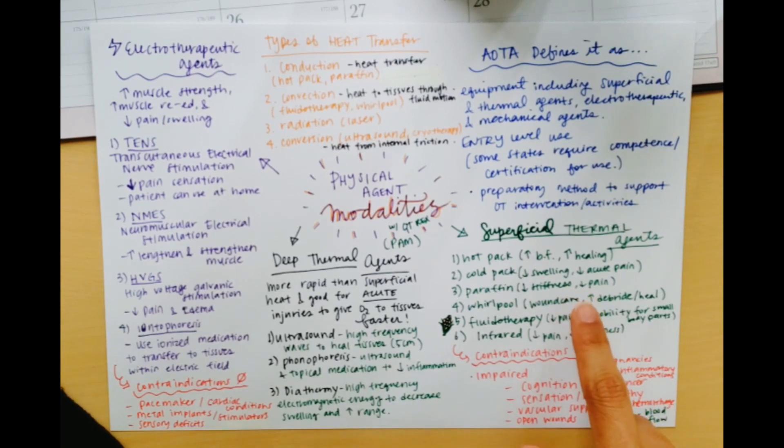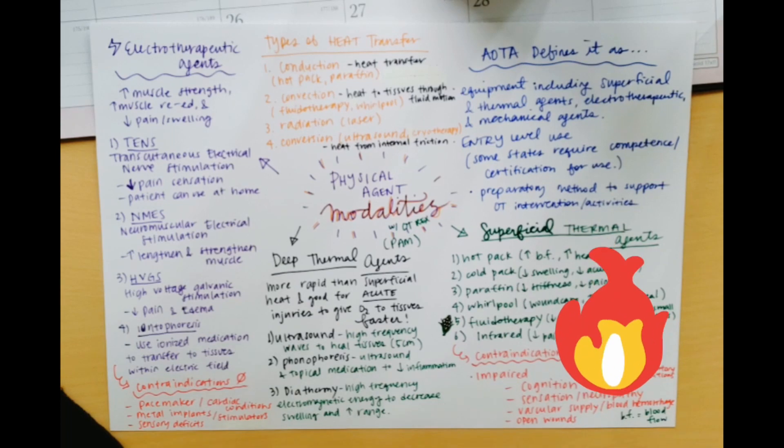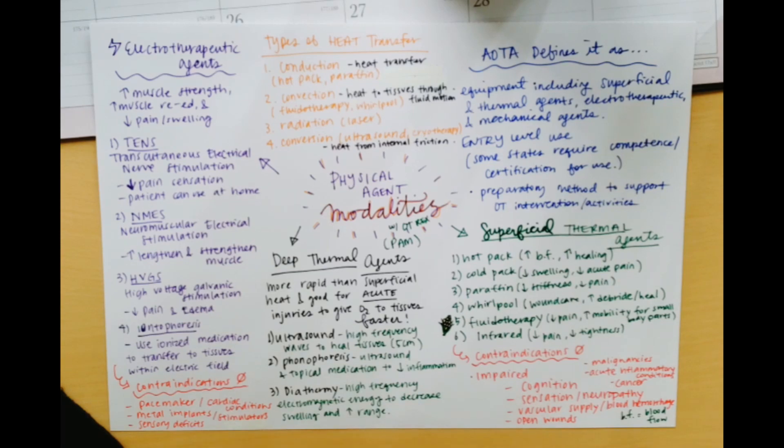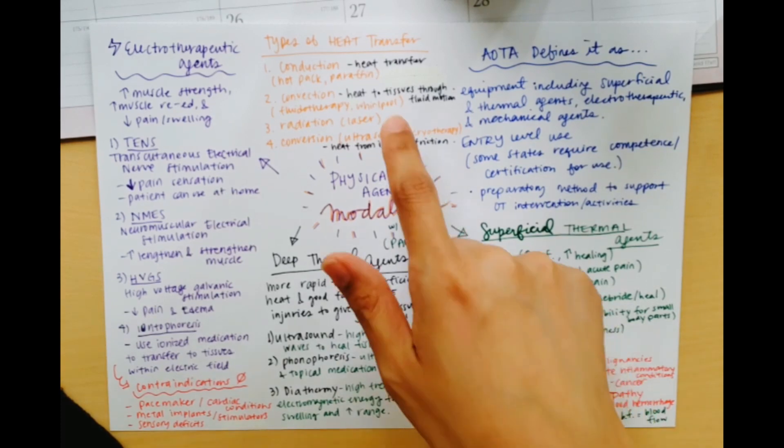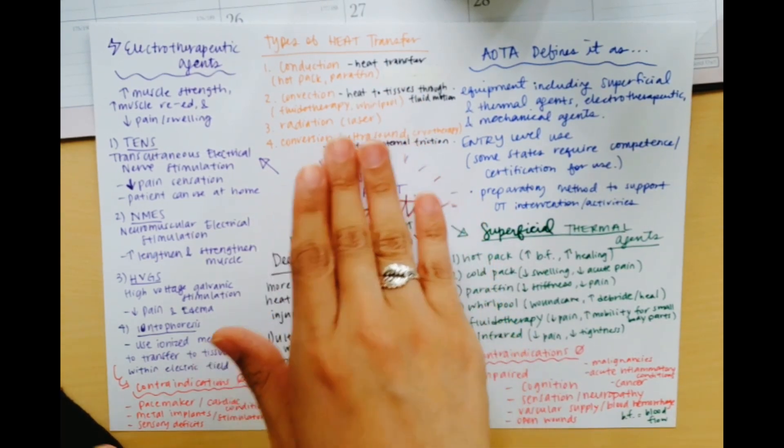I'm gonna go ahead and start with types of heat transfer. So types of heat transfer is just a breakdown of the different kinds of heat transfers that are out there. And there are four. Conduction is just the idea of heat transferring. So a hot pack or paraffin wax would be an example. Convection is similar, but what we're doing is using the heat to get to the tissues through a fluid motion. So that would include fluidotherapy and whirlpool. Sometimes I see whirlpool under conduction. I think it's because both of them are heat related. So again, depending on your source, you might see that differently.